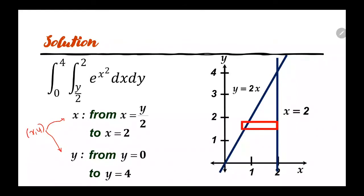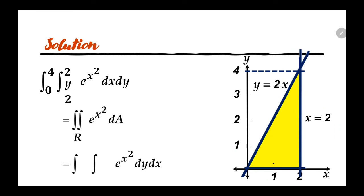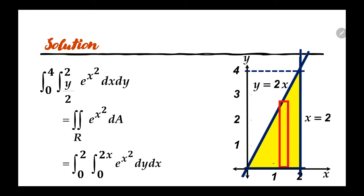We consider horizontal strips to indicate that the y values range from 0 to 4, giving us the region of integration. From this region, we reconstruct the bounds of the double integral such that dy comes first before dx. Looking at the graph, instead of a horizontal strip we use a vertical strip. The bounds for y are the curves enclosing the vertical strip: y equals 2x and y equals 0. The values for x go from 0 to 2. Now we have the double integral with the changed order of integration.